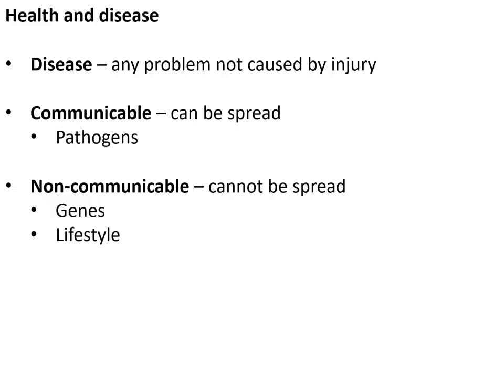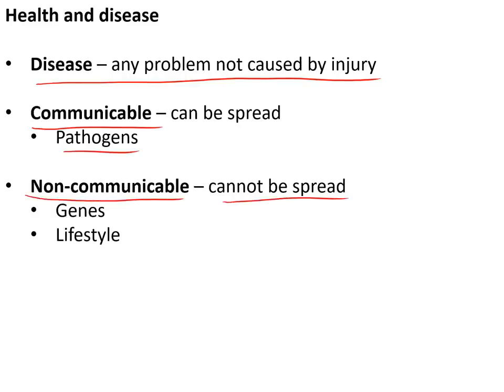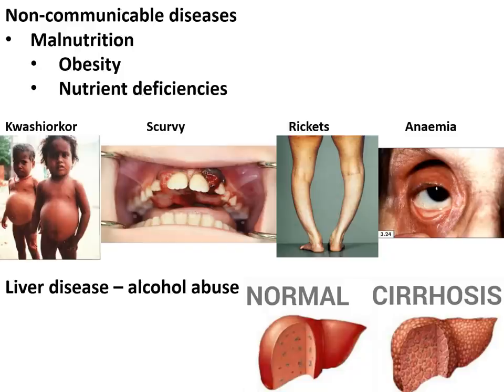Health and disease: disease is any problem with the body not caused by injury. Diseases can be communicable — meaning they can be spread, caused by pathogens — or non-communicable, meaning they cannot be spread, caused by either your genes or your lifestyle.